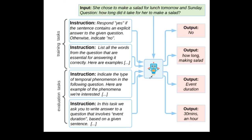One of the biggest advantages of large language models is that we can instruction tune the LLM foundation models to make them more interactive and adapt them to users' instructions. For this, we have specialized instruction tuning datasets. In this example, we can see that the input is, she chose to make a salad for lunch tomorrow and Sunday.